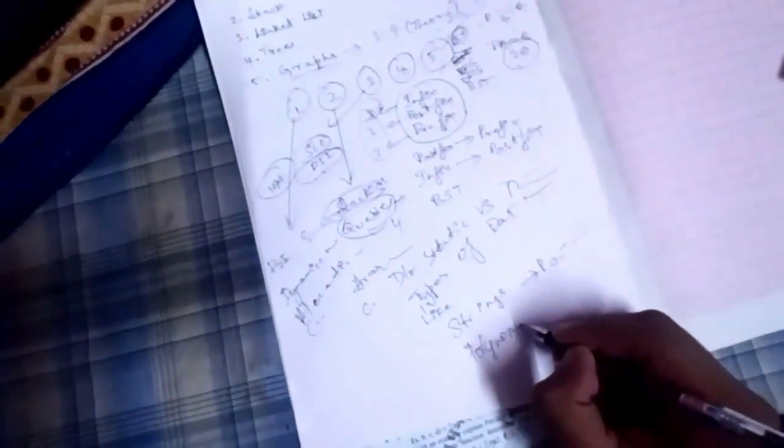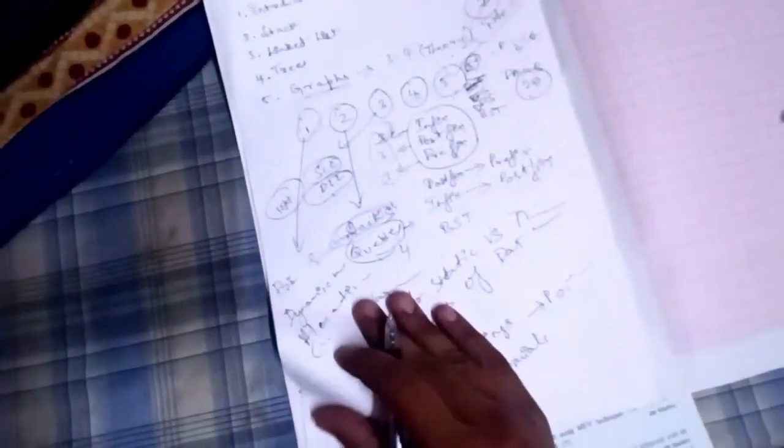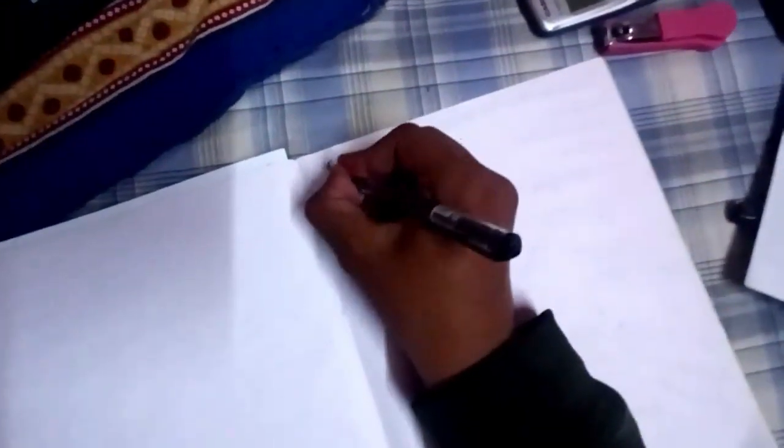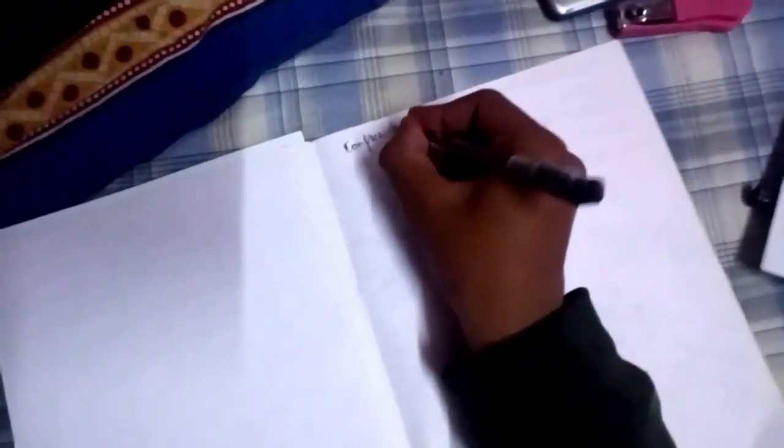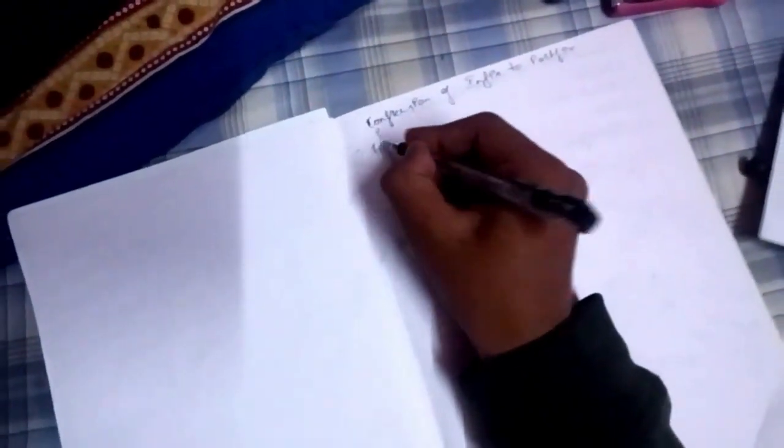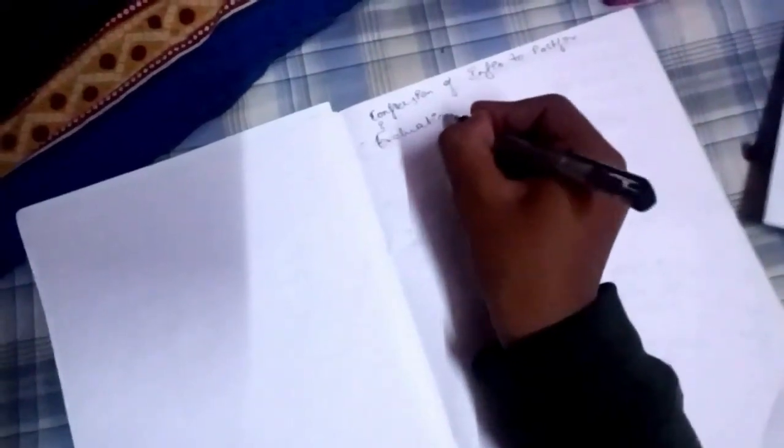In the second module, one more important topic is Strings — this is easy and covers pointers as well. Also take a quick look at Polynomials. The two most important numerical questions in the second module are: conversion of infix to postfix, and evaluation of postfix expressions. That's it — thank you.